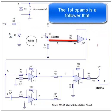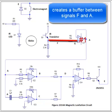The first op-amp is a follower that creates a buffer between signals F and A.